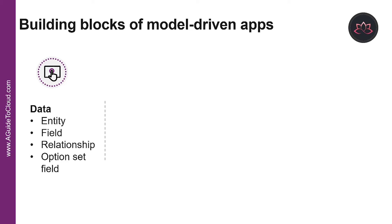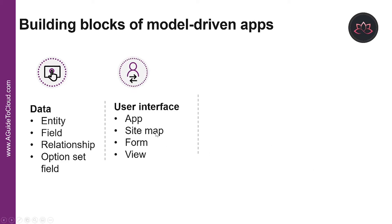The next building block is User Interface. User interface components include app, sitemap, forms, and views. App determines the app fundamentals like components, properties like client type, and the URL. Sitemap specifies the navigation for your app. A form includes a set of data entry fields for a given entity that matches the items your organization tracks. Views define how lists of records for a specific entity appear in your app.